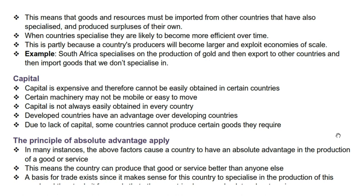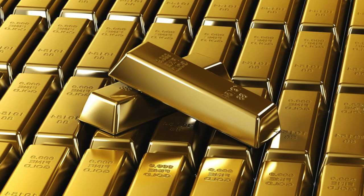When countries specialize they are likely to become more efficient over time. This is partly because a country's producers will become larger and exploit economies of scale. For example, South Africa specializes in the production of gold and then exports to other countries, then imports goods that it does not specialize in.